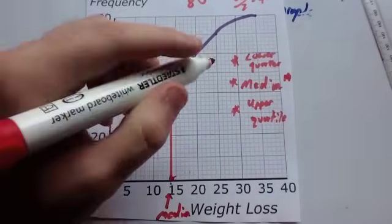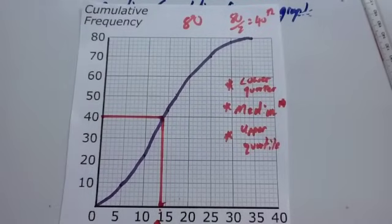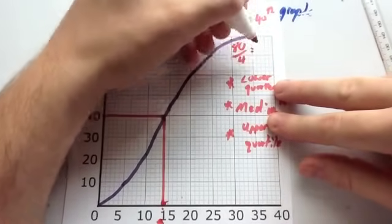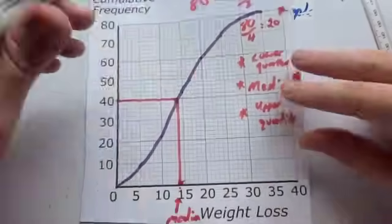Now let's find the lower quartile. Because there's 80 people, we want to find the lower quartile. Well, the lower quartile is a quarter of the way in through to the values, so where the 25th percentile is. So we're going to do 80 divided by 4. 80 divided by 4, a quarter of the way in, is 20. So we're looking for the 20th person.